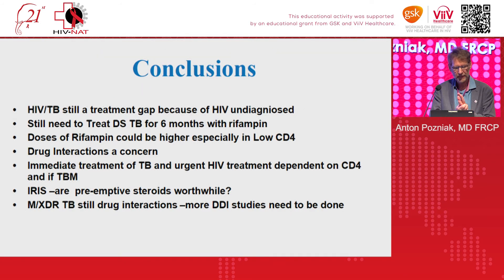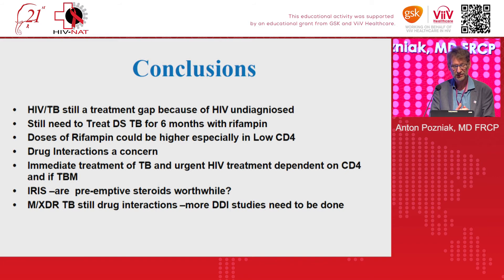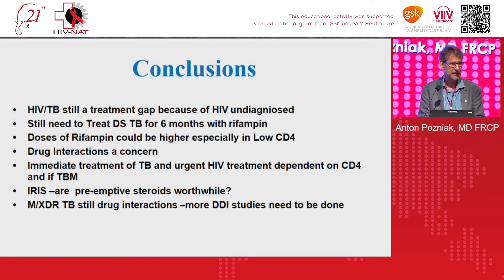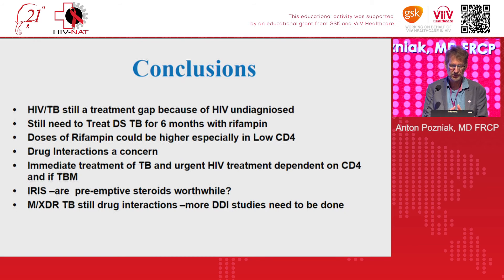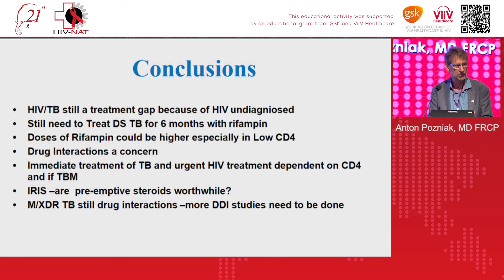In conclusion: there is still a big treatment gap due to undiagnosed patients. Drug-sensitive TB still requires six months including rifampicin, and higher doses of rifampicin — especially in low CD4 patients — may improve mortality. Drug interactions are a major concern, and resources like the Liverpool website are invaluable. Timing of ART is dependent on CD4 count and presence of meningitic TB. Pre-emptive steroids for IRIS prevention look promising from current data. We still have many challenges with drug interactions in the setting of new TB drugs. Thank you all for listening.